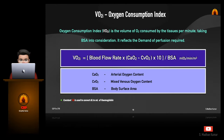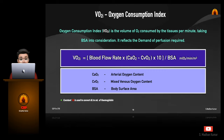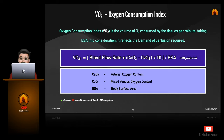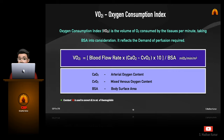We will see how to calculate the oxygen consumption index, otherwise known as VO2I. It is the volume of oxygen consumed by the tissues per minute taking body surface area into consideration. It reflects the demand of perfusion required. The inputs needed for calculating VO2I are arterial oxygen content, mixed venous oxygen content, and body surface area.